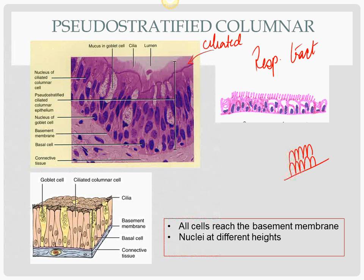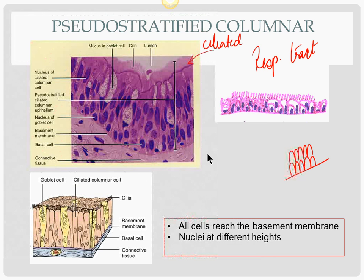Pseudo-stratified columnar in the respiratory tract may also have goblet cells, which trap particulate matter.